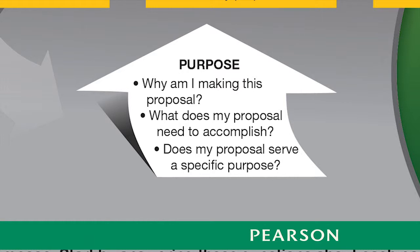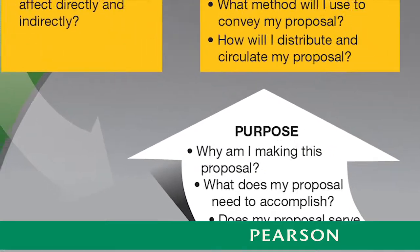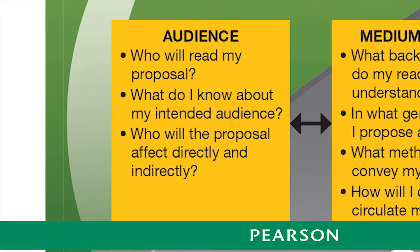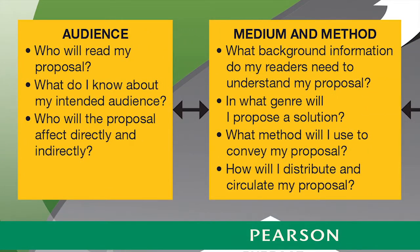Once they have a sense of their purposes in writing to propose, students should then begin asking about who will be reading their proposals, asking questions to determine what they know about their audiences. At the same time, students should consider in what medium and by what method will they convey their proposals. The questions they ask about medium and method should be asked in conjunction with their questions about audience, since the responses work together to help students frame their understanding of the situation.